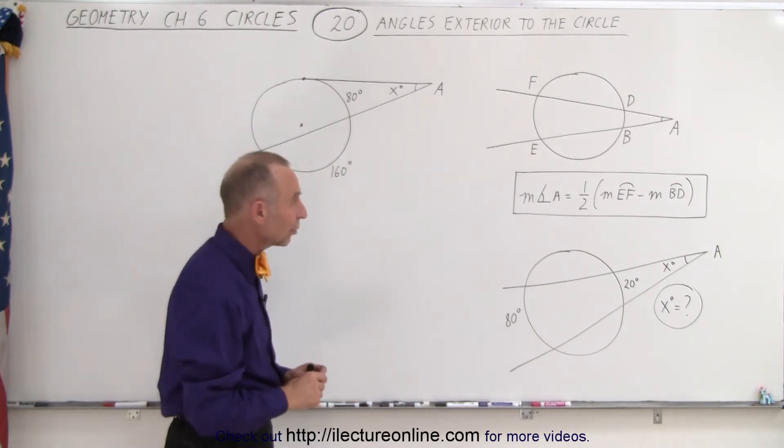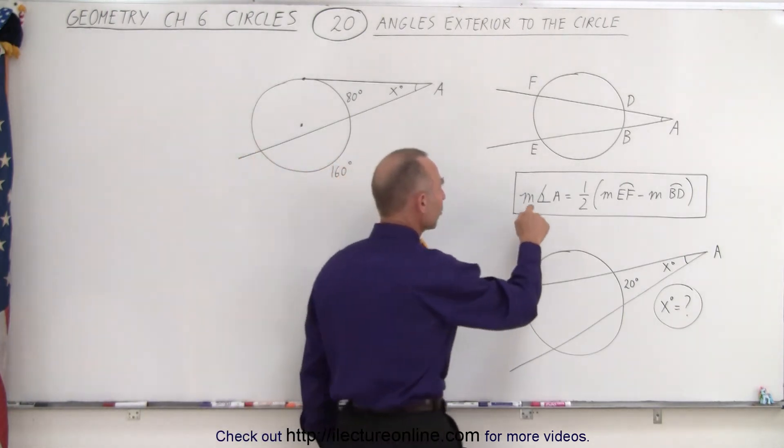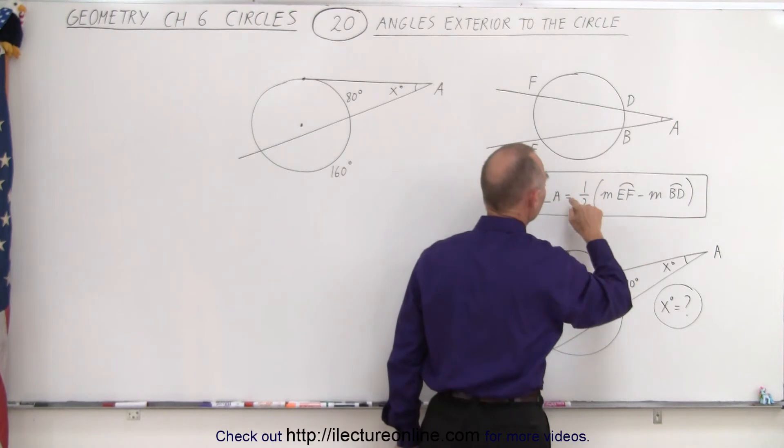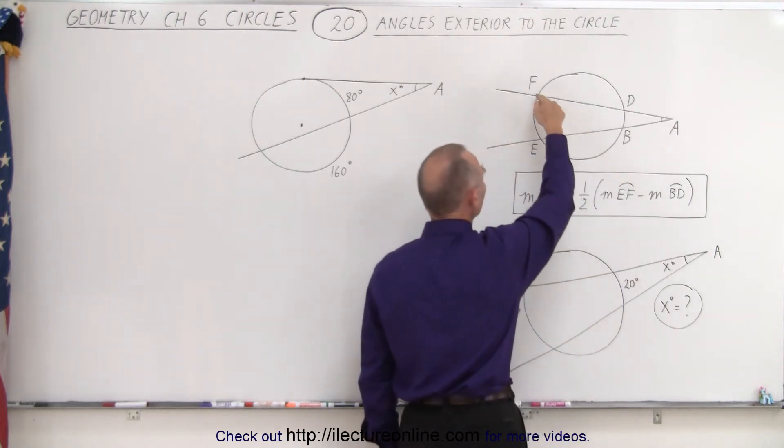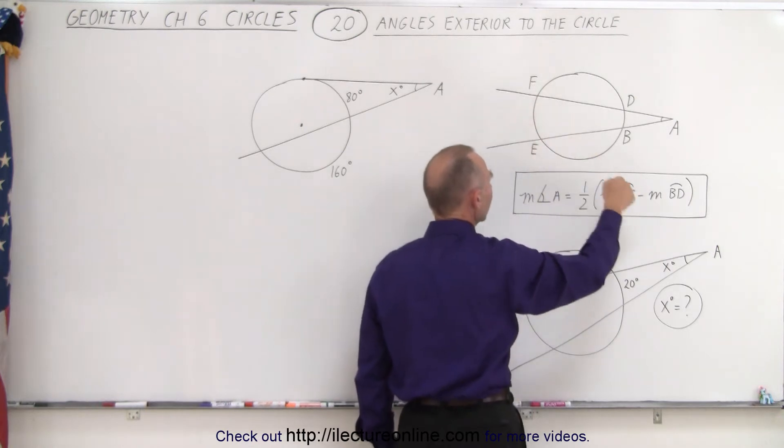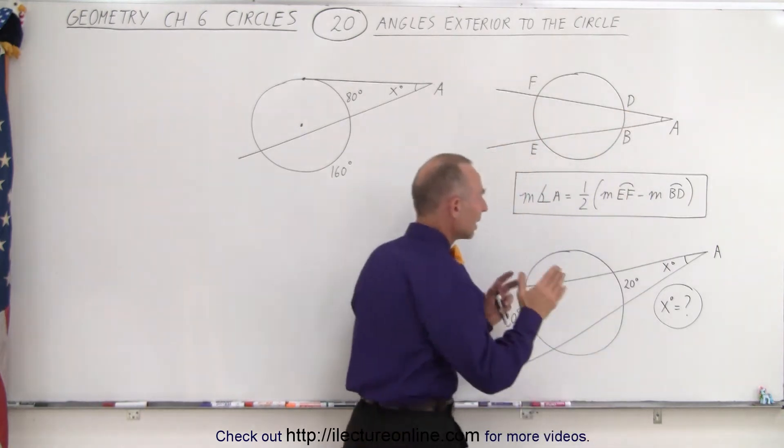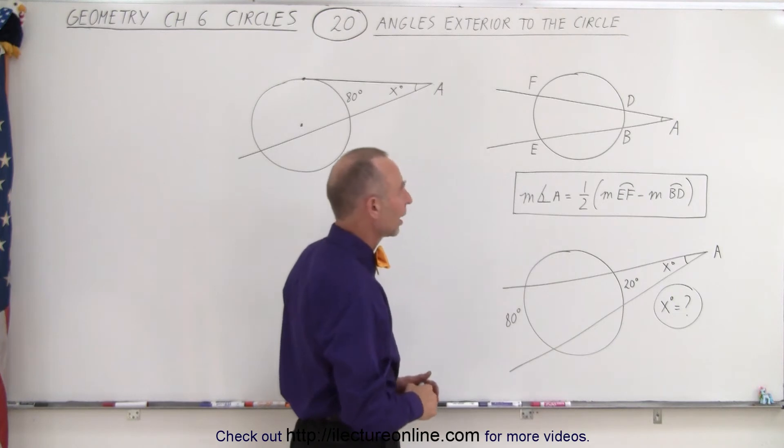When we have a situation like that, we can say that the measure of the angle is equal to one half the difference between the measure of the arc on the far side minus the measure of the intercepted arc on the closed side.